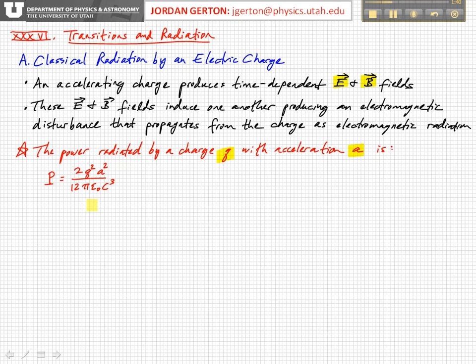Remember, epsilon naught is the permittivity, electric permittivity of free space times the speed of light cubed. So it's proportional to the square of the charge and the square of the acceleration. That's what you'd expect from classical mechanics.